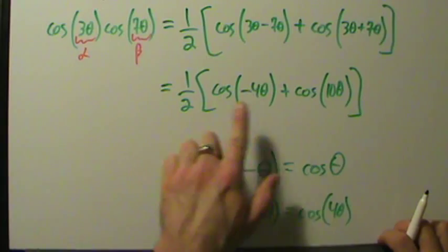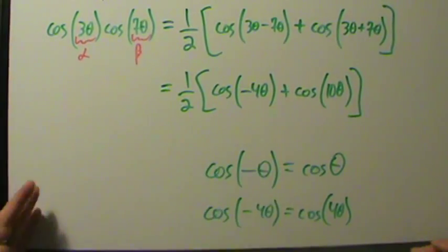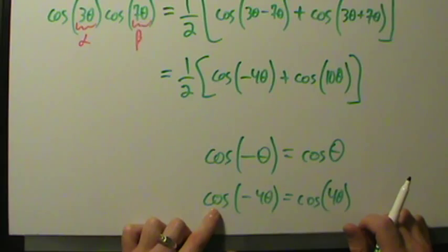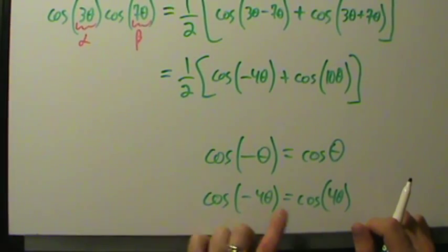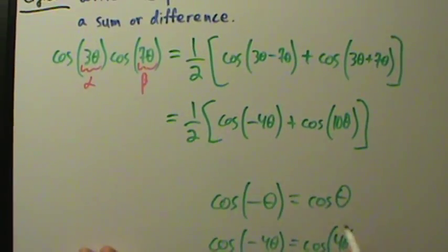Now we can just rewrite this without that minus sign in there. That's a really nice property of even functions—cosine of negative something equals just cosine of that thing without the minus sign.